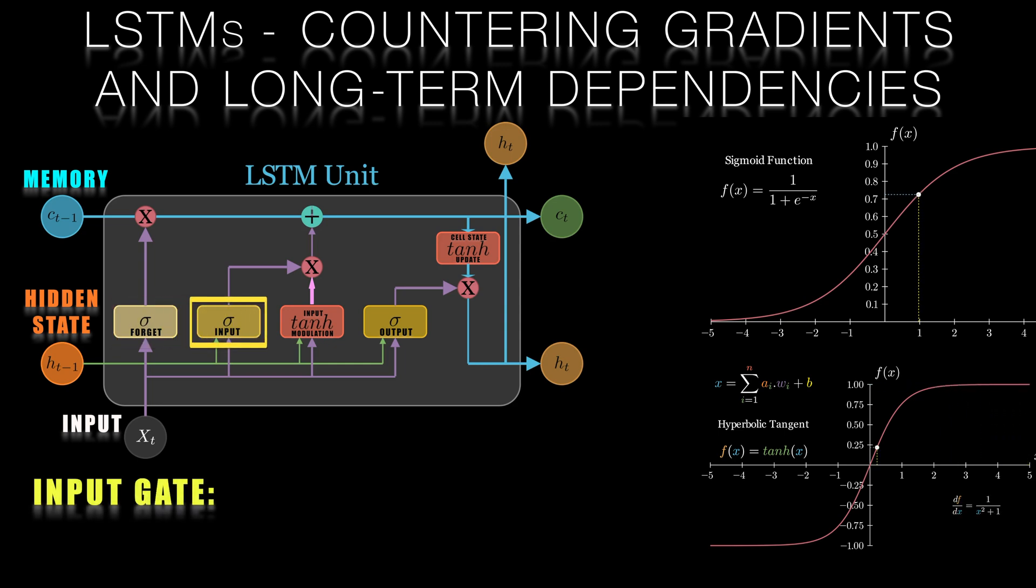The input gate determines which new information should be added to the memory cell. It takes as input the previous hidden state and the current input. It passes them again through a sigmoid and outputs a value between 0 and 1 for each element of the memory cell. This value is called the input gate activation. The input gate activation is then multiplied by the candidate values that are created by a tanh activation function in the input modulation. The candidate values are potential new information that could be added to the memory cell.